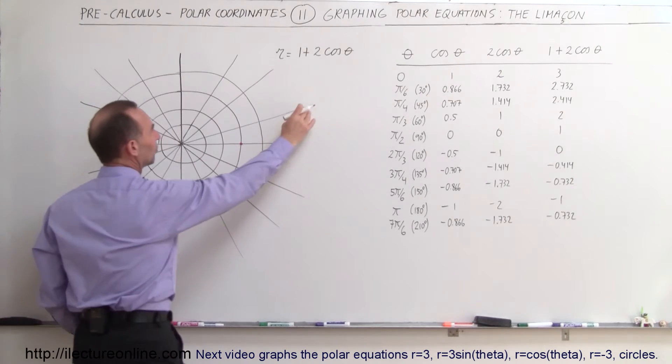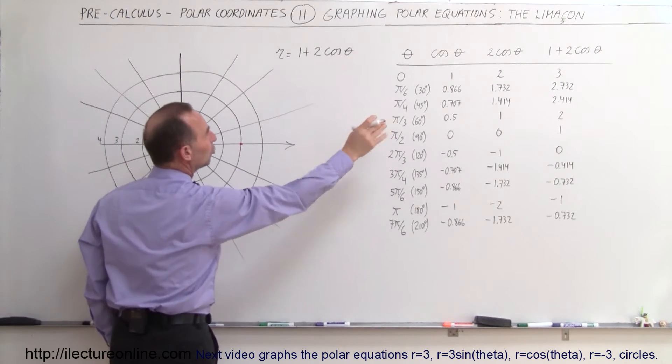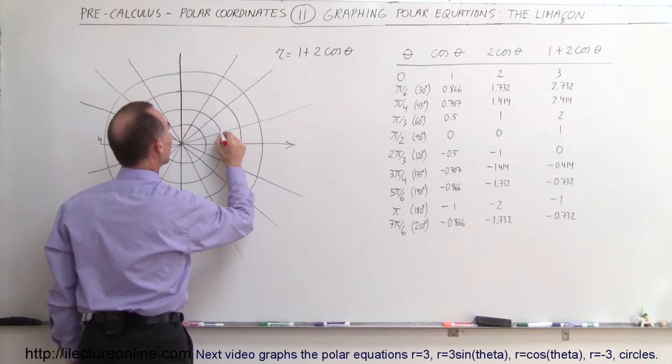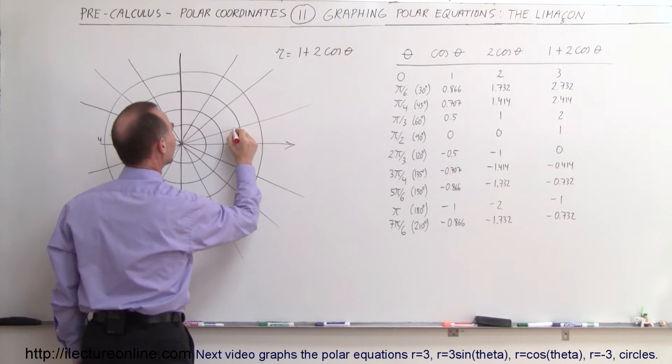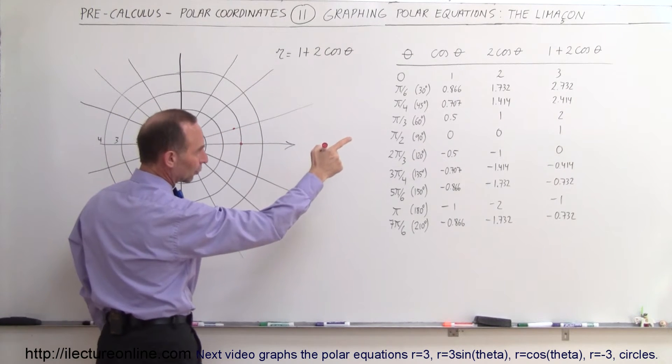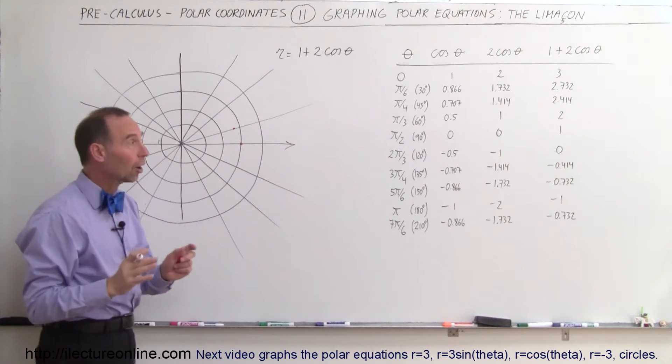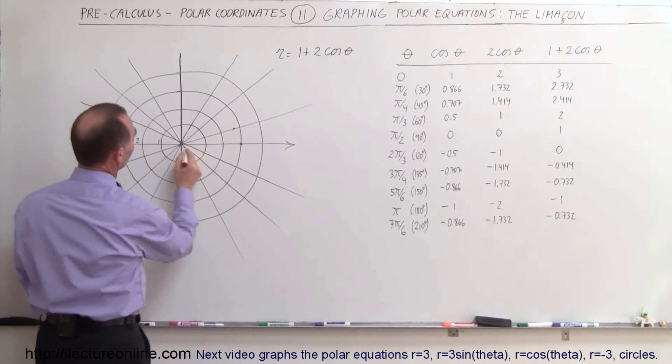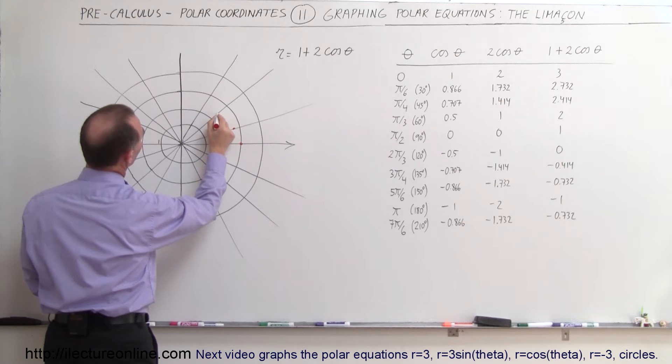Go to an angle of 30 degrees, and of course this here would be 30 degrees. It would be 2.732, so that's between 2 and 3, kind of like over here. At an angle of 45 degrees, then r would be 2.4. So at 45 degrees, it would be 2.4, it would be about there.